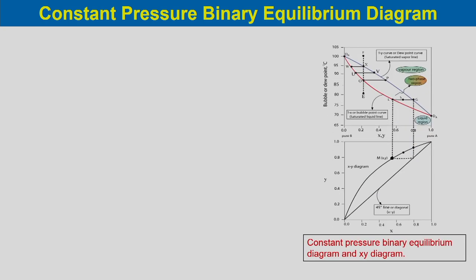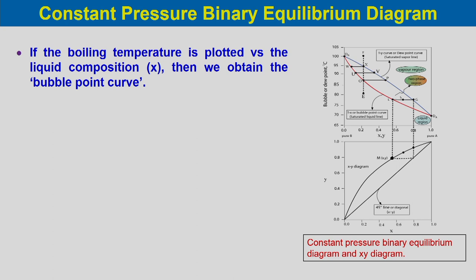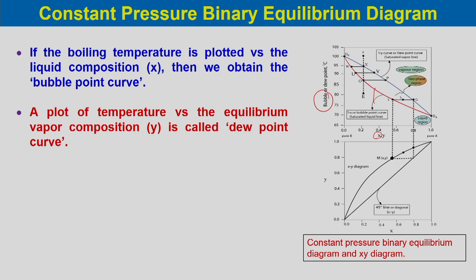We will first consider the constant pressure binary equilibrium diagram. If the boiling point temperature is plotted versus the liquid composition x, we obtain the bubble point curve — the lower red line, also called the saturated liquid line. A plot of temperature versus the equilibrium vapor composition y is called the dew point curve — the upper blue line, also called the saturated vapor line.